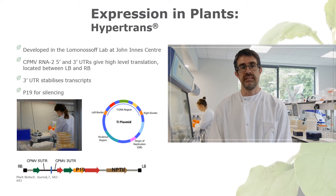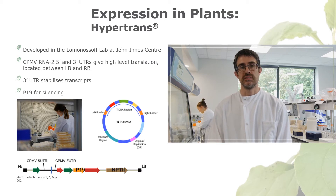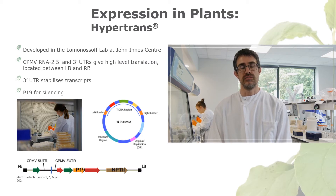The gene of interest — the target protein we want to produce — is placed within this vector. Once within the cell, there is no need for the viral vector to replicate, as the hypertranslatable region prior to the DNA enriches the translation efficiency by the plant's protein production machinery. Accumulation of target protein within the leaves is also enhanced by the presence of the P19 gene, which prevents silencing of the foreign gene.